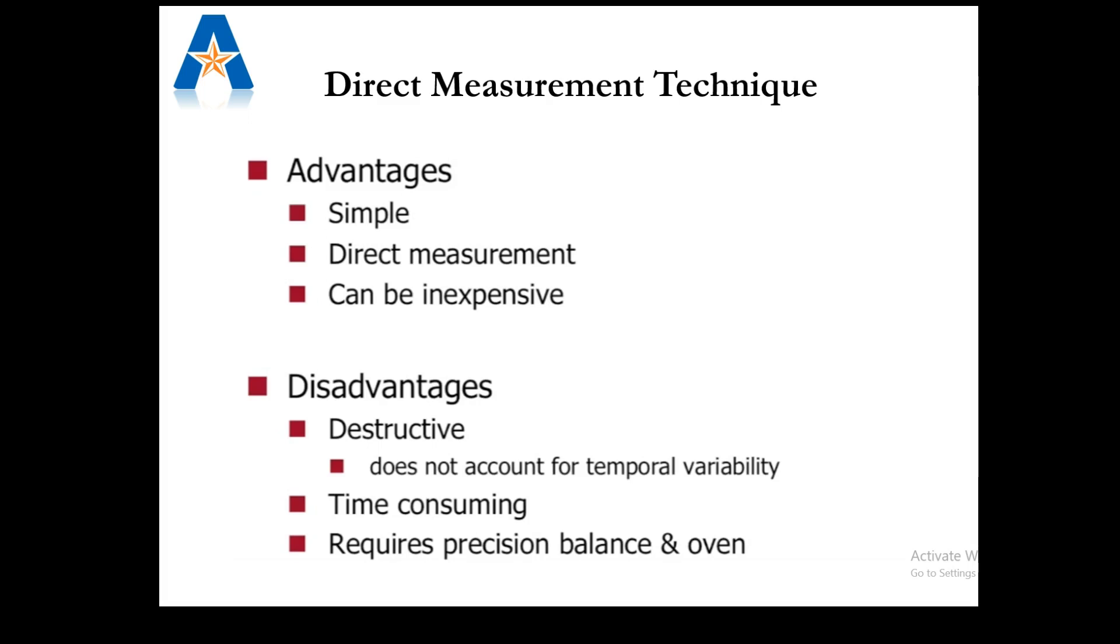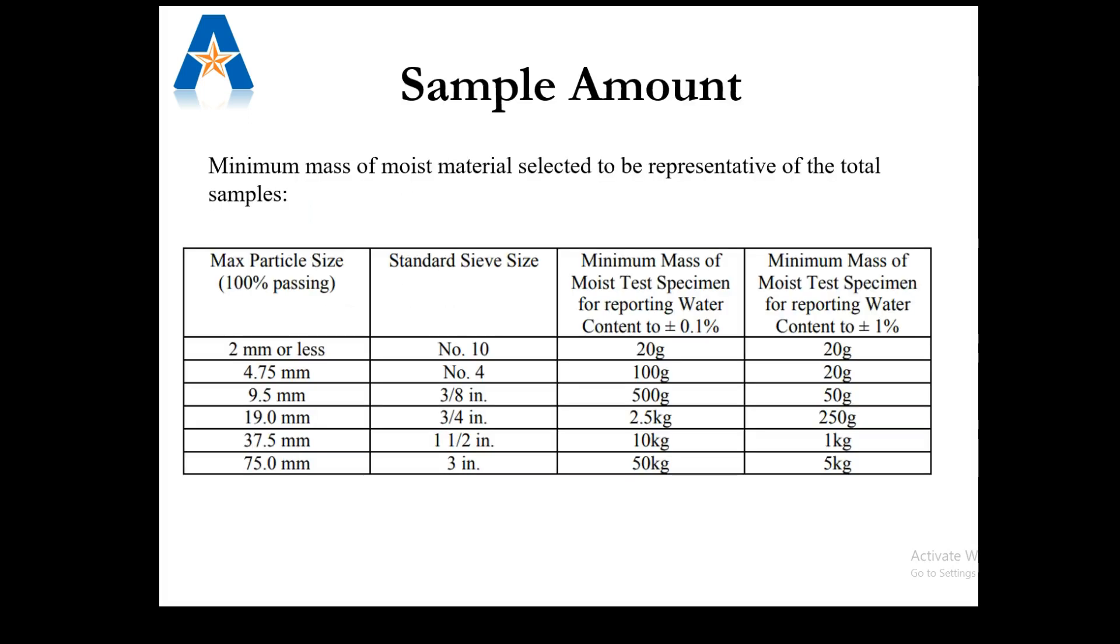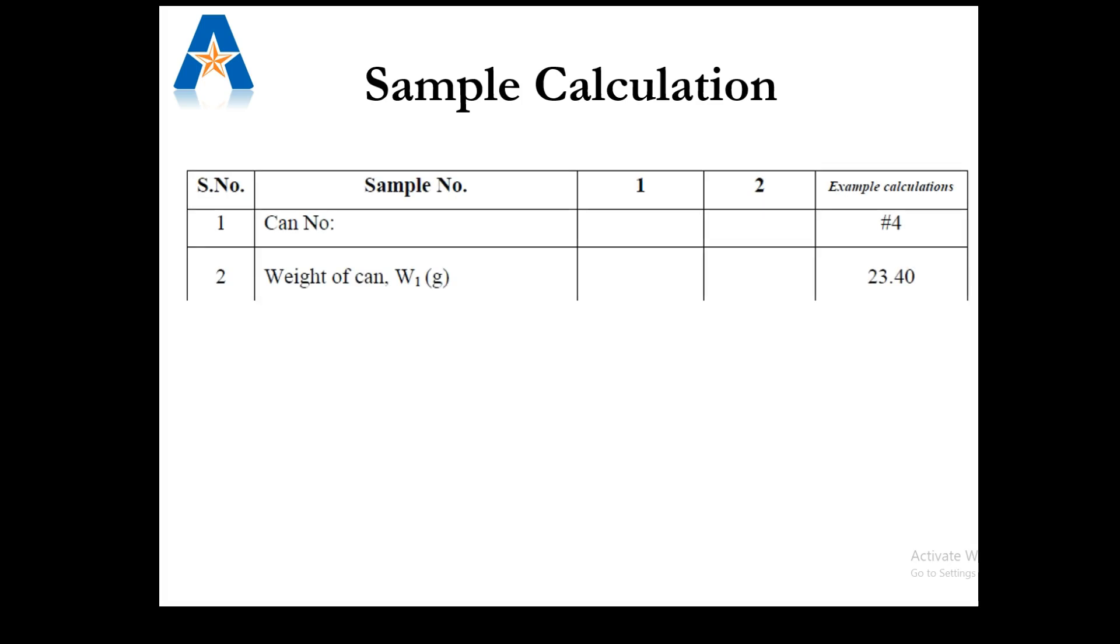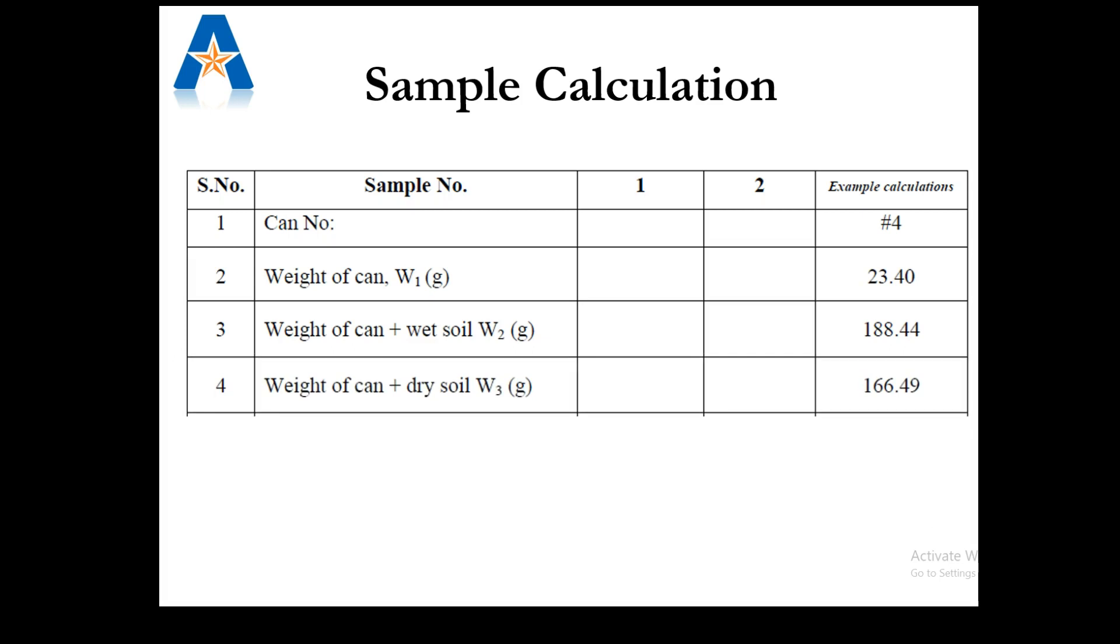For this experiment, we will follow the direct method. The amount of sample size needed depends on the maximum particle size. Usually for particle size smaller than 4.75 millimeters, we need to take a minimum of 20 grams soil sample. At the beginning, the weight of the moist soil needs to be recorded. Then the sample will be put in oven for 24 hours at a temperature between 110 to 120 degrees Celsius. After that, the weight of the dry soil needs to be recorded.